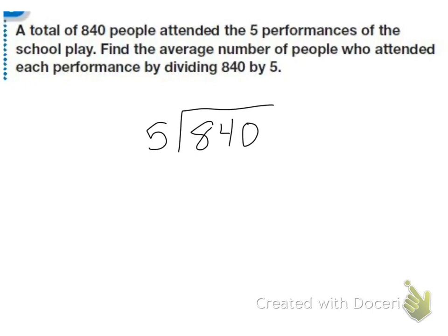I think, 8 divided by 5 is 1. Then do 5 times 1 is 5, so 8 minus 5 is 3. I'd put the 3 next to the 4. Then I think, 34 divided by 5 is 6. 5 times 6 is 30, and 34 minus 30 is 4. I'd carry the 4 over here. Then I'd think, 40 divided by 5 equals 8, and 5 times 8 is 40. So I'm finished. We have an average of 168 people that attended the performances.